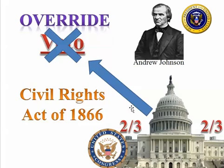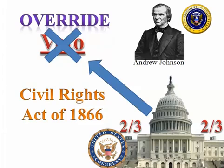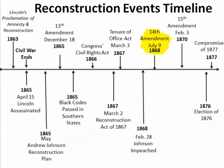What did Congress do in response? They overrode his veto by a two-thirds vote of both houses. On major legislation like the Civil Rights Act of 1866, this was the first time Congress was able — by two-thirds vote of both houses — to override a presidential veto. The Civil Rights Act of 1866 became law, and the Freedmen's Bureau was put into place.